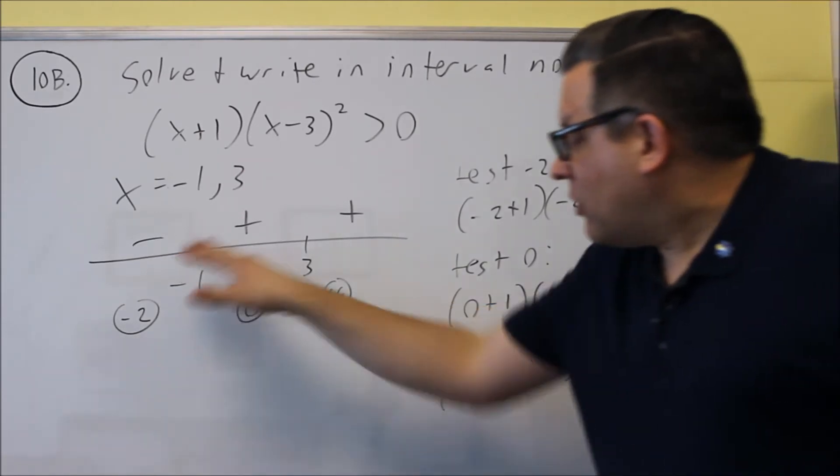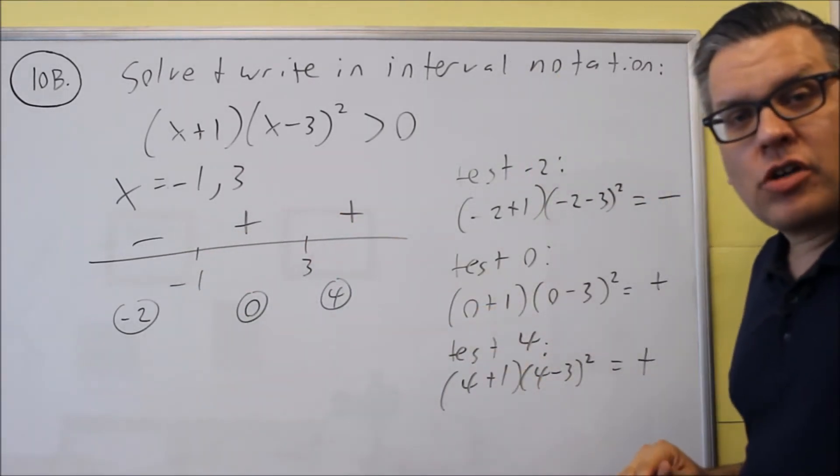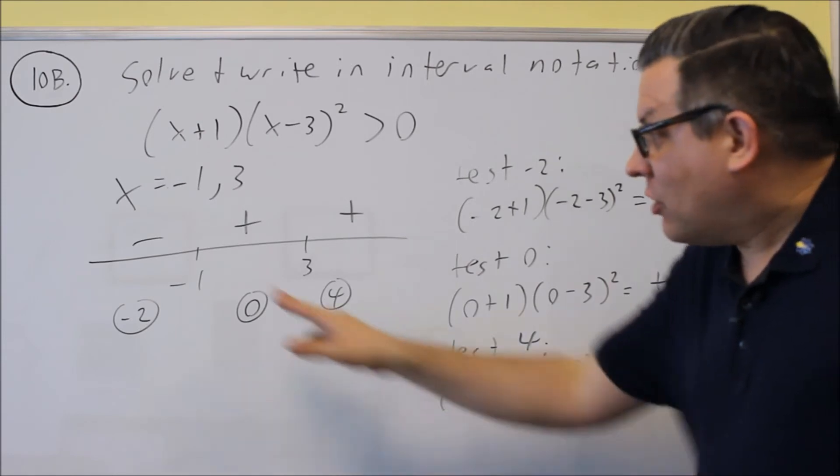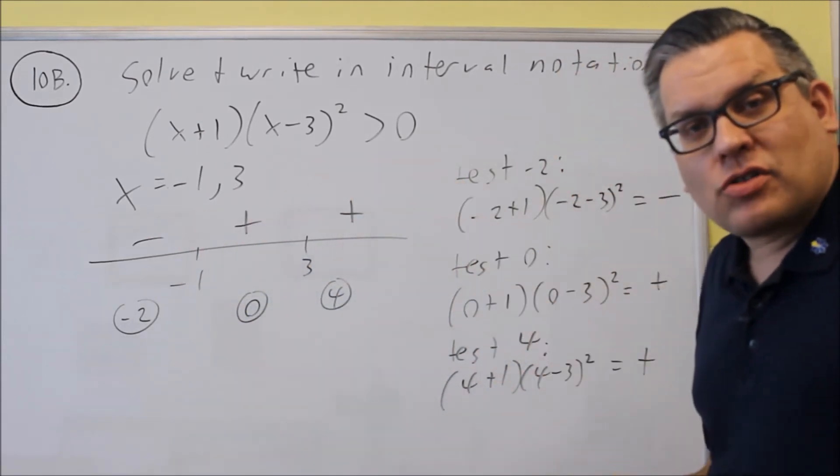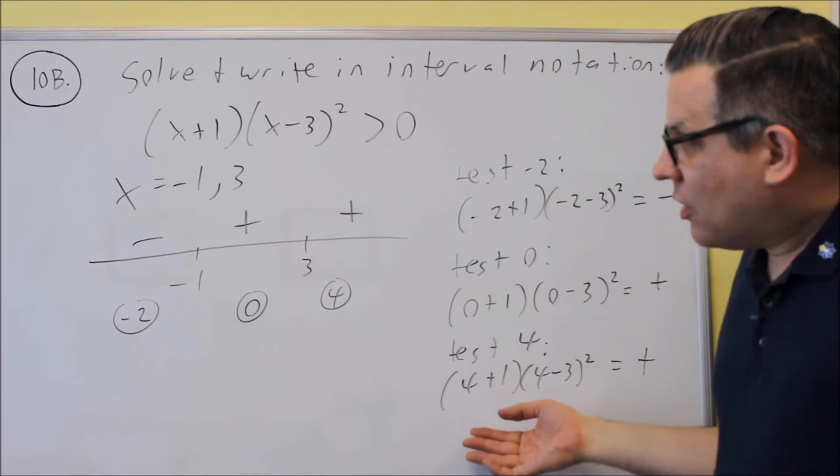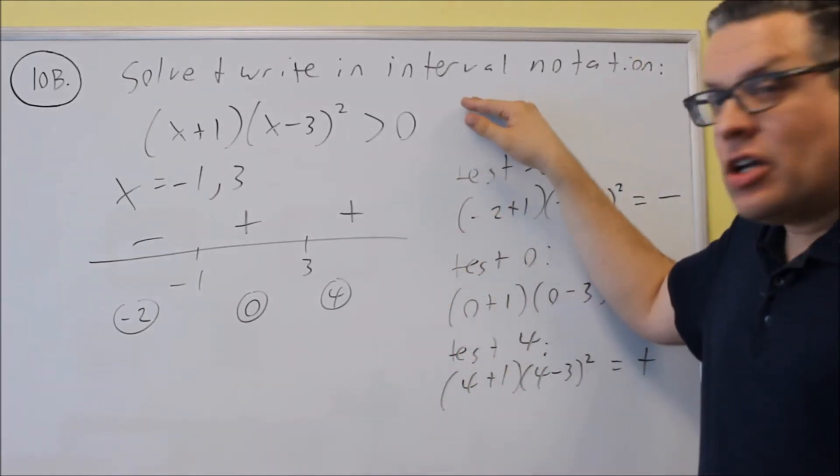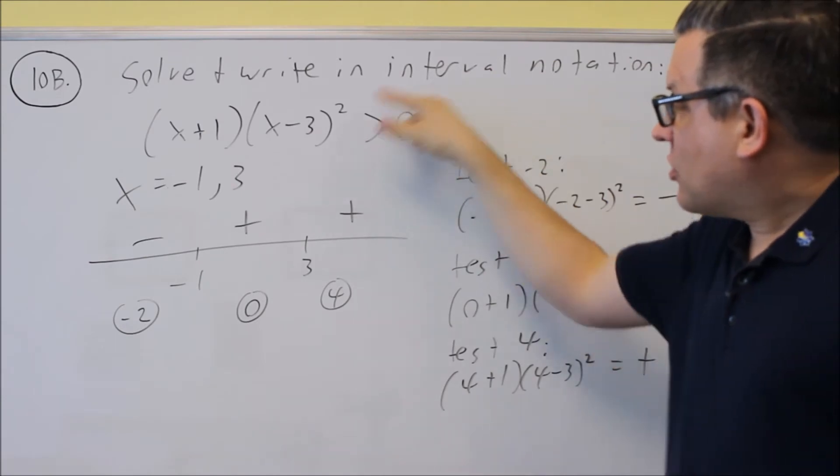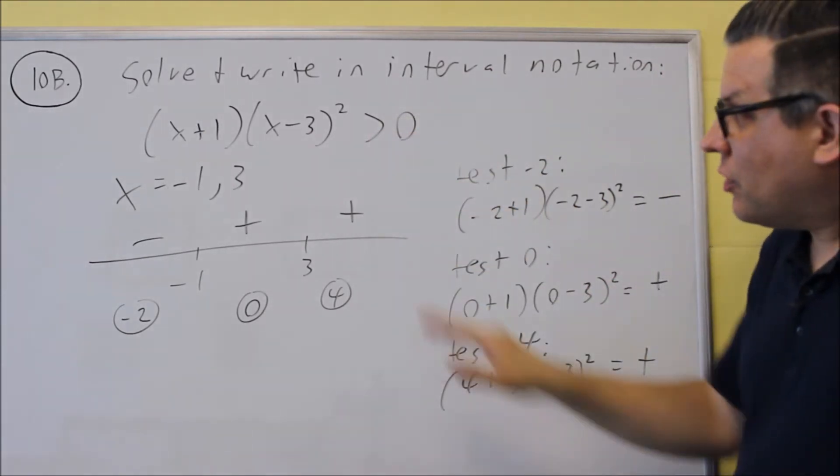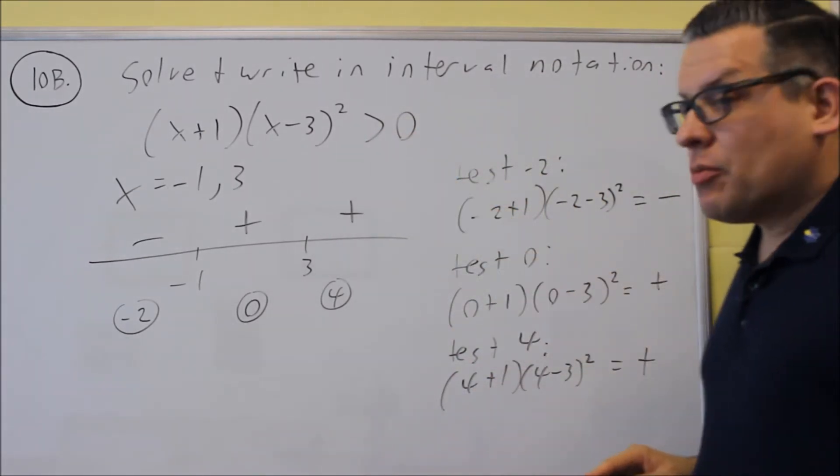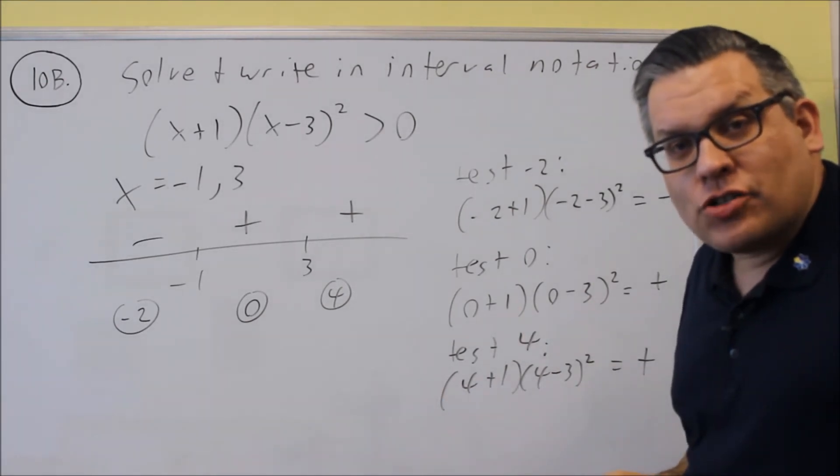Now that I got this, this is going to be my final sign configuration. If you were to do this with the table method, you would actually get this same result across the top of the table if you did it that way. So now that I have that complete, I'm ready to indicate my answer. This is a greater than zero, and greater than zero means that I'm looking for the positive regions.